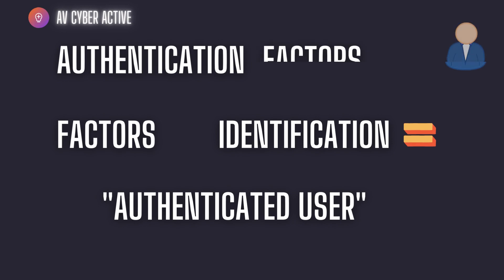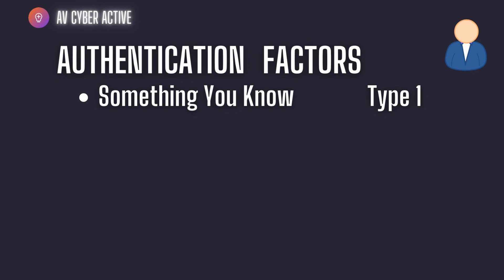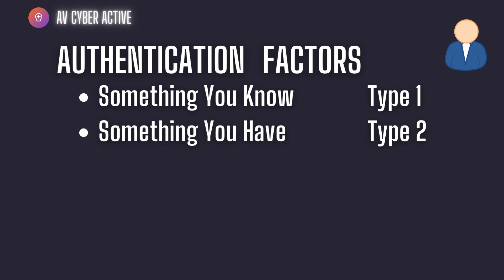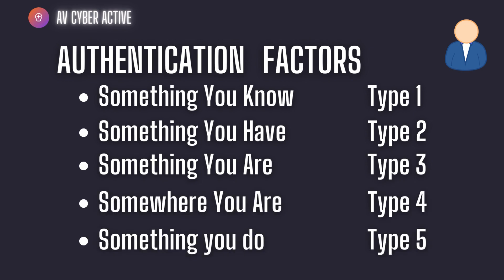Type one is something you know. Type two, something you have. Type three, something you are. Type four and type five are not really talked about, but type four is somewhere you are and type five is something you do.